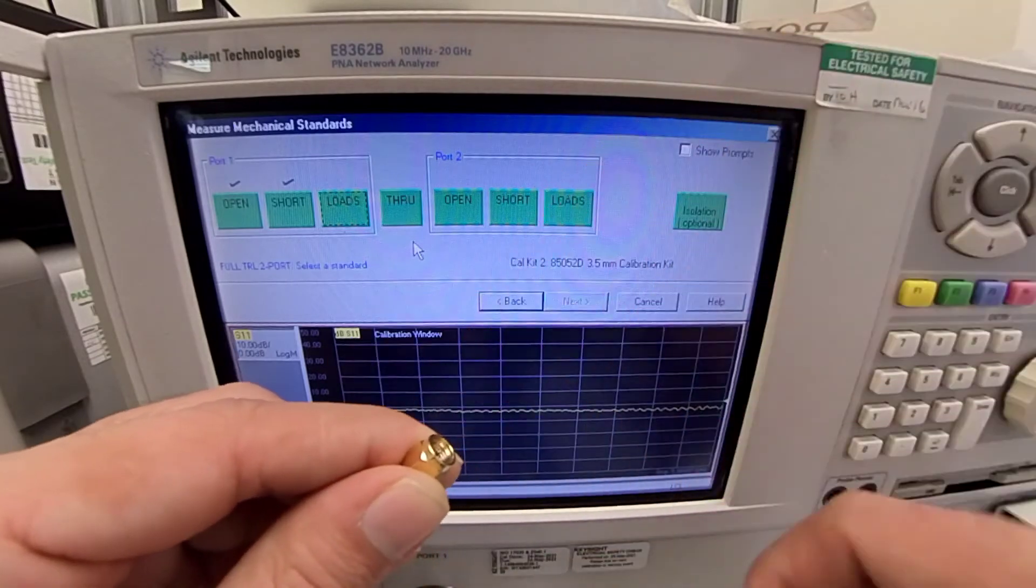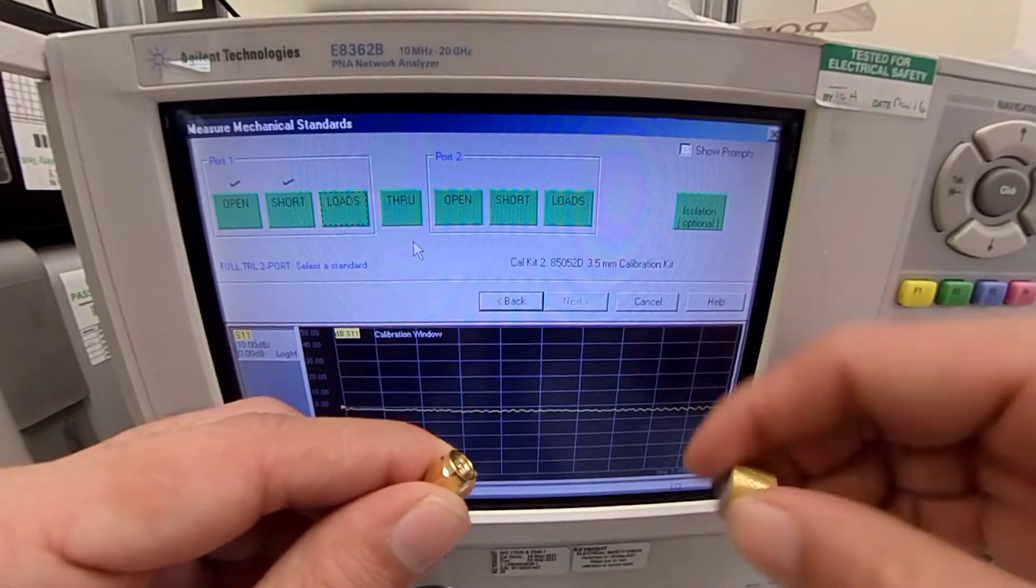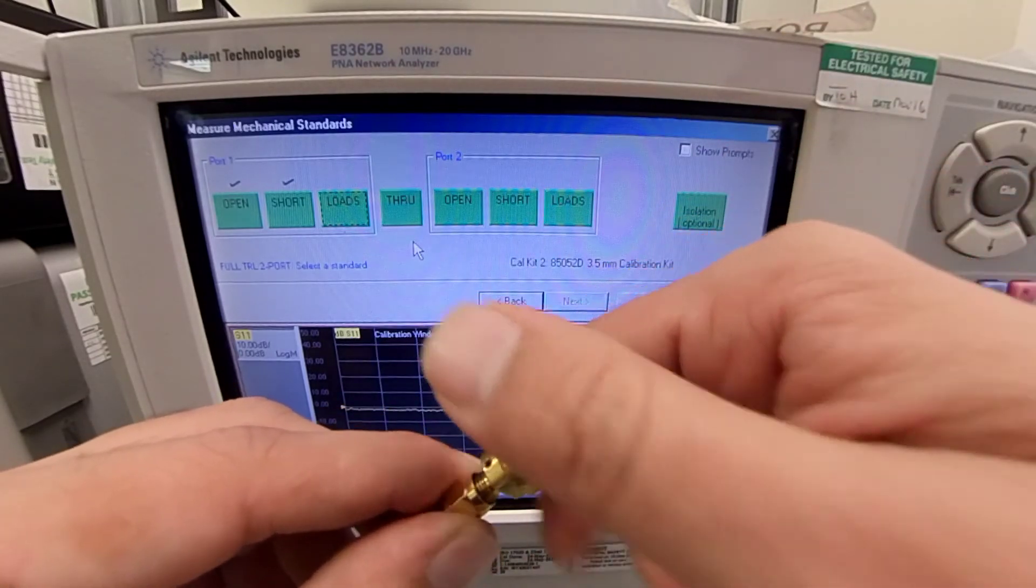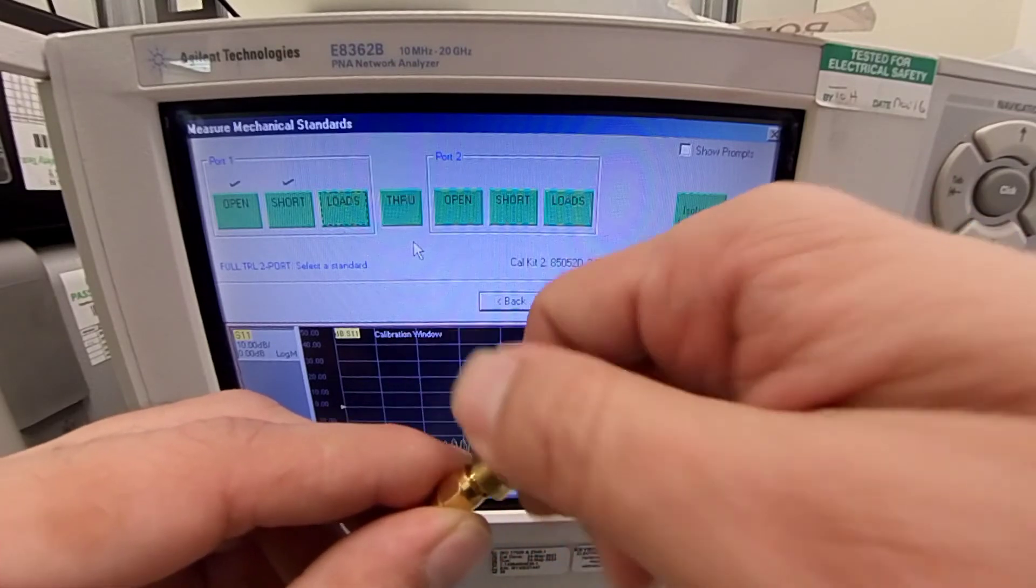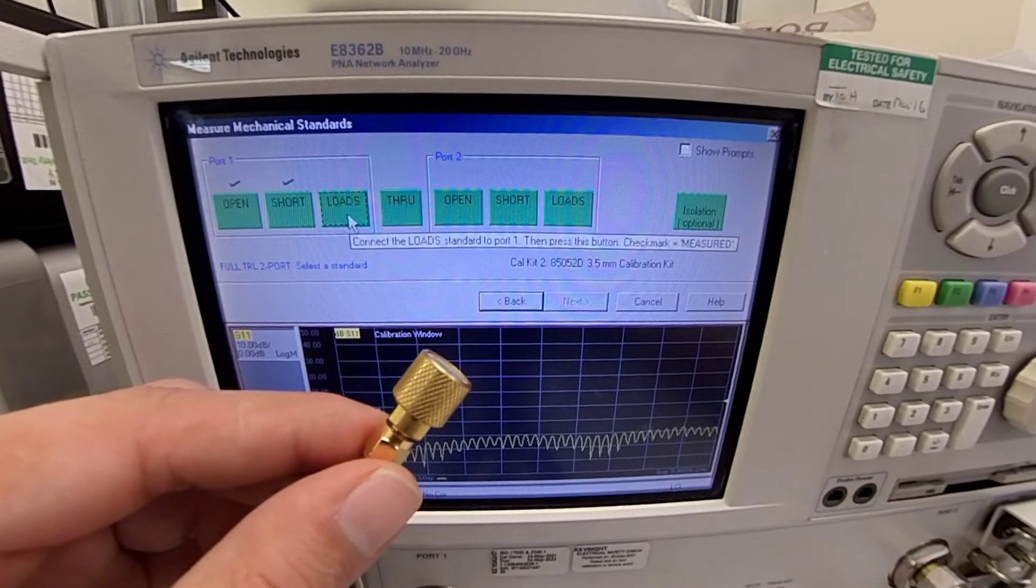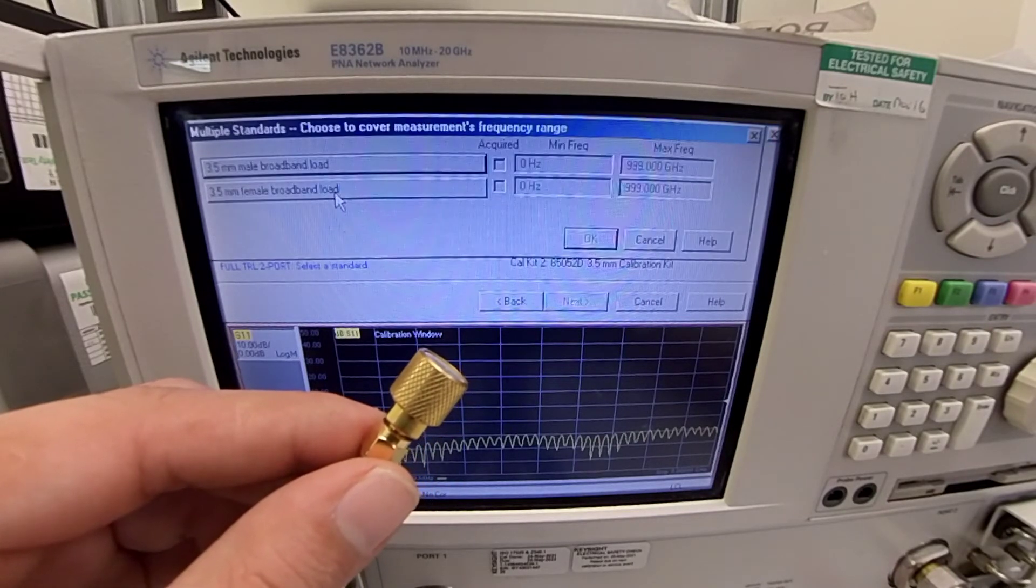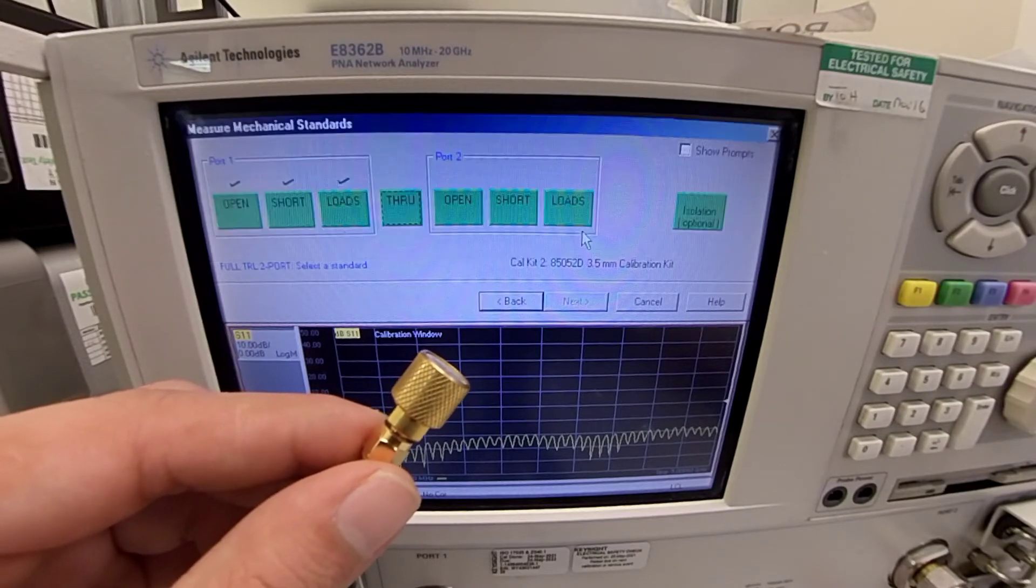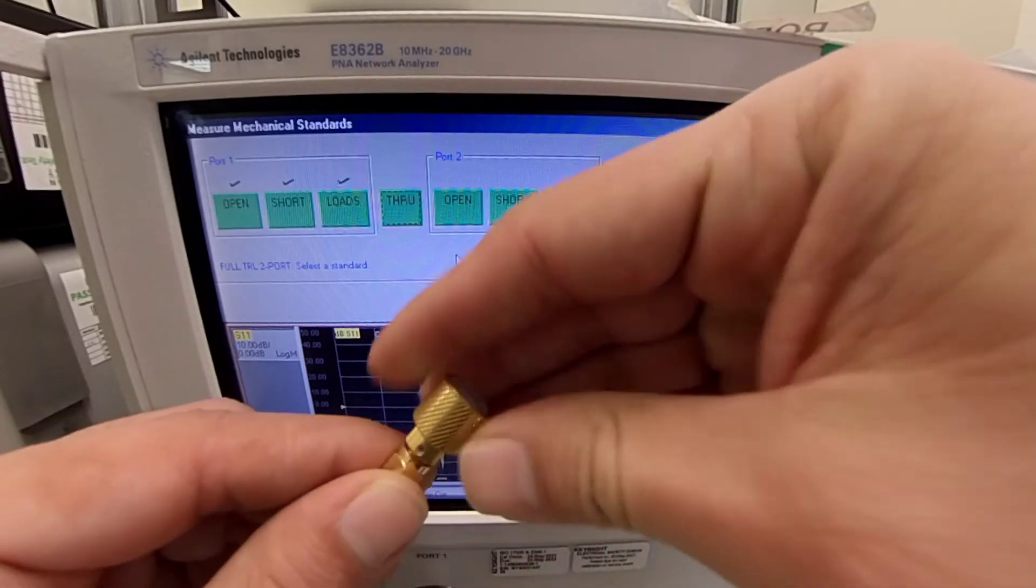Now, we replace this with the broadband load. Press on loads. Female, broadband load. Press OK. And we are done with the calibration of port number 1.